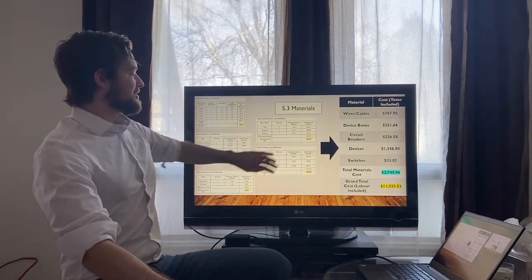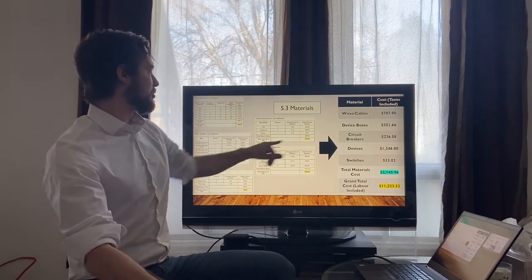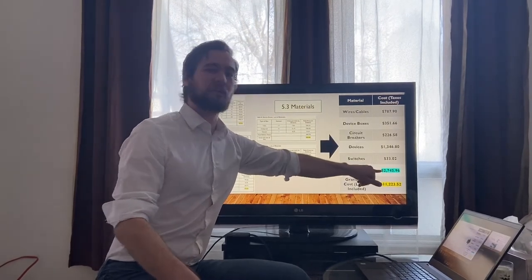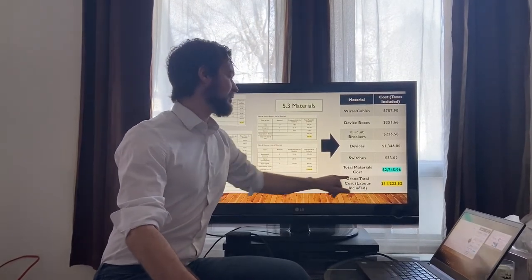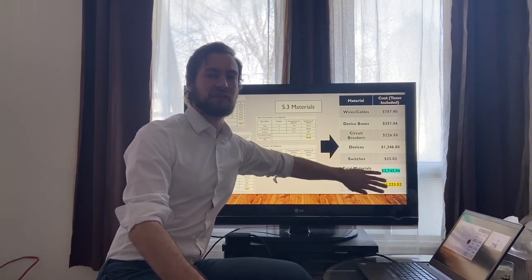So here are a list of all the materials, as I mentioned earlier, the number we'll be needing of each and their total prices after taxes. After totaling it all up, we've got a total cost of materials of about $2,700 and a grand total price quote of about $11,000. This is with the labor included.